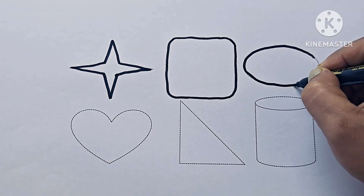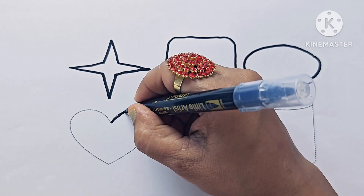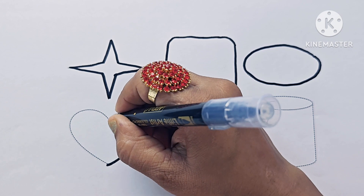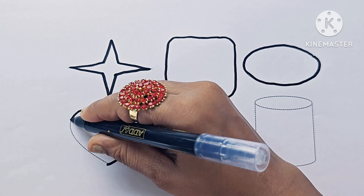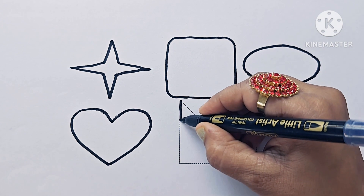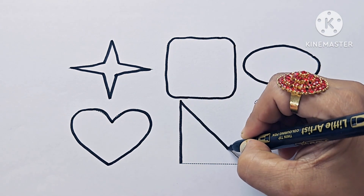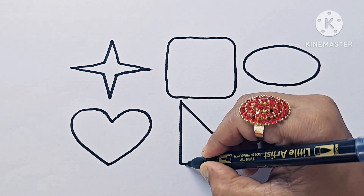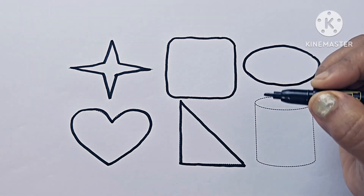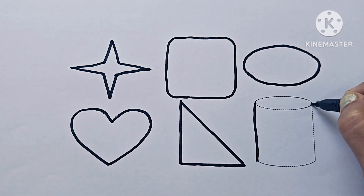This shape is a 2D shape oval. This is a heart. This shape is a heart. This is a right angle triangle. 'Tri' means three — it is a shape having three angles. It is a 2D shape.